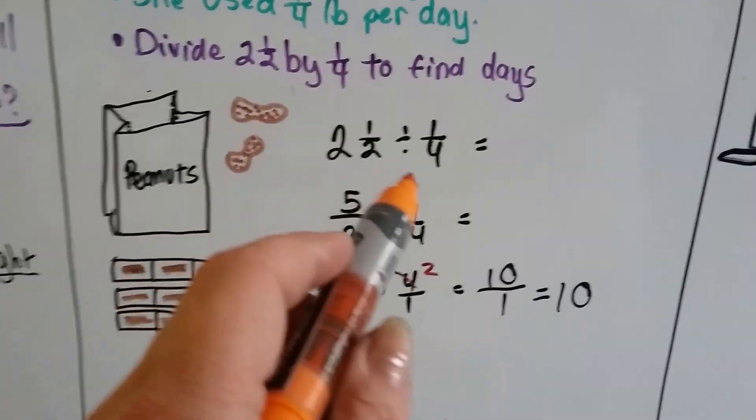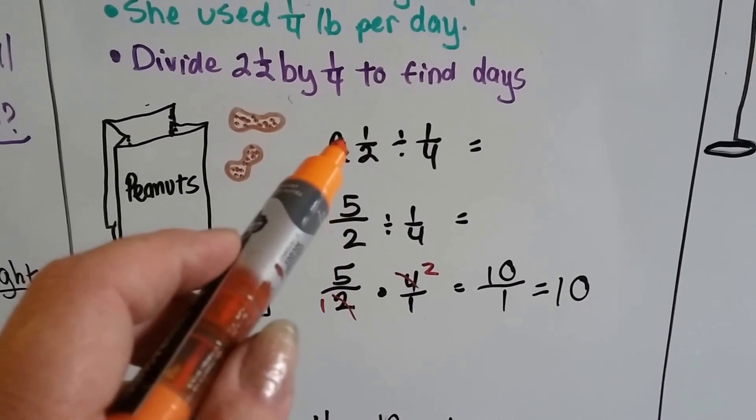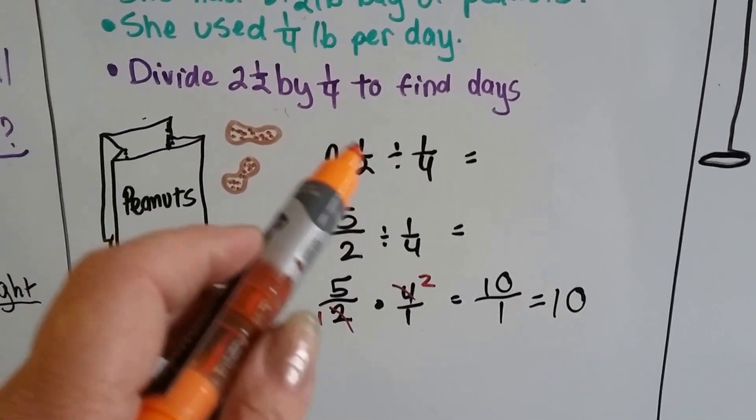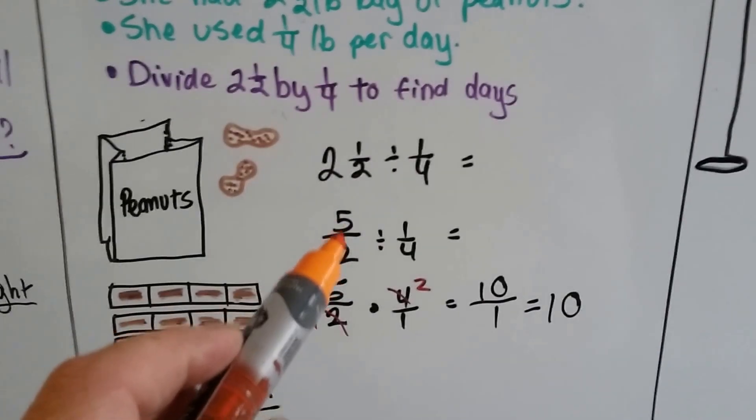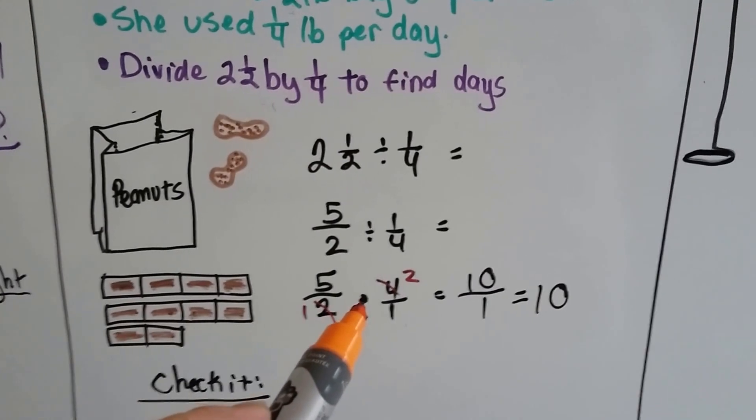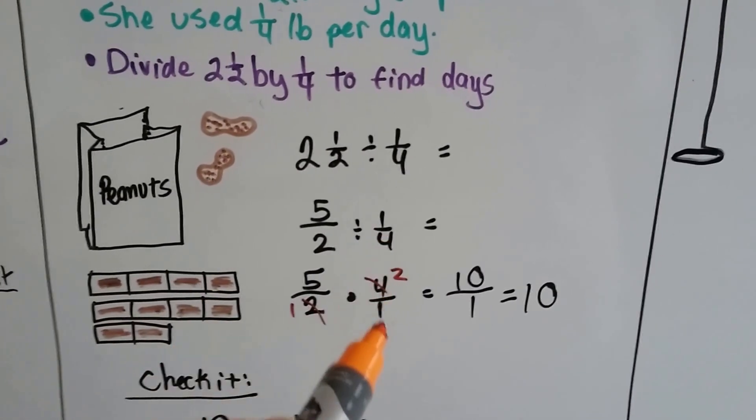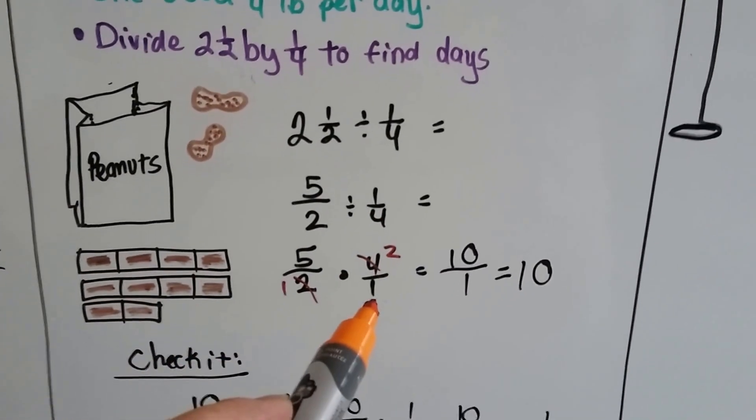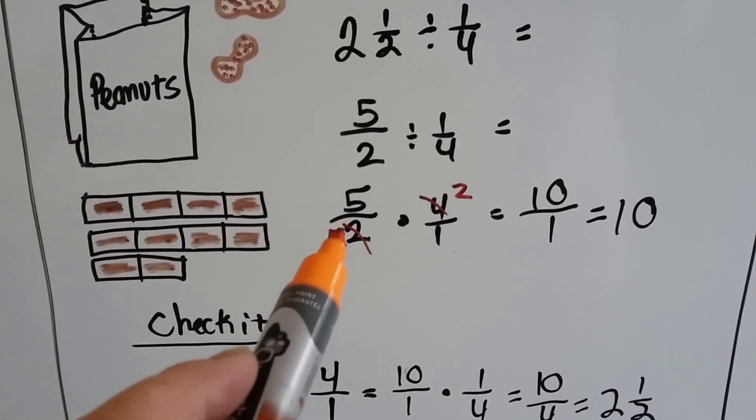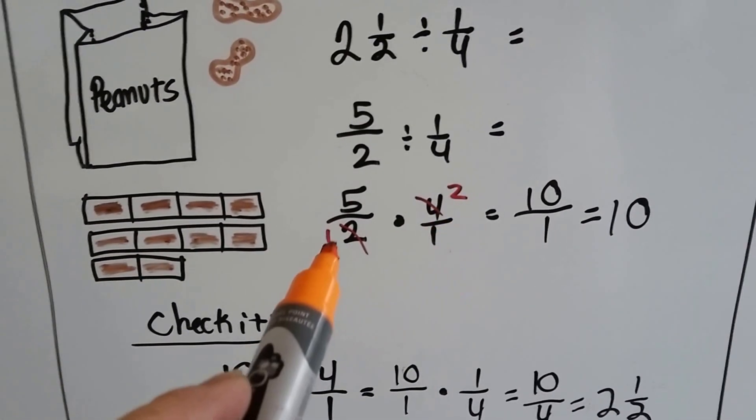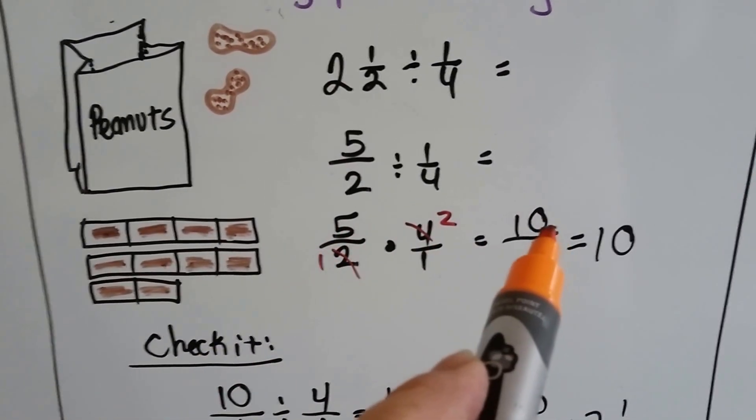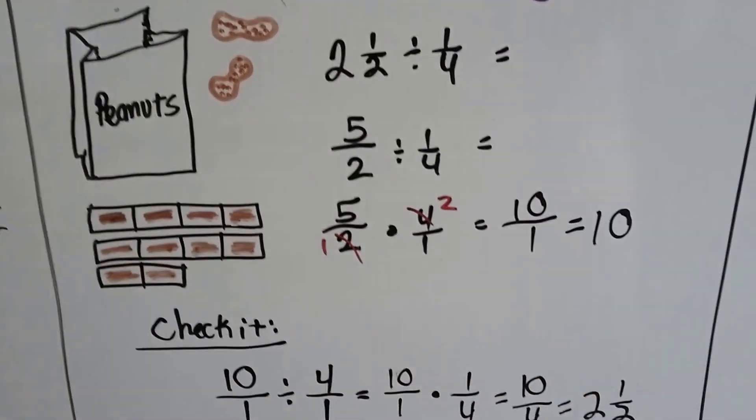Two and a half divided by a fourth becomes five halves, because two times two is four plus the one is five, and we make an improper fraction out of the two and a half. That has to be divided by a fourth. So to divide fractions, we turn it into a multiplication problem and turn the one fourth into its reciprocal of four over one. Now we can cancel out the two and the four to a one and a two. Two goes into two one time, it goes into four two times. Now we can just multiply across and get ten over one, which is ten days.